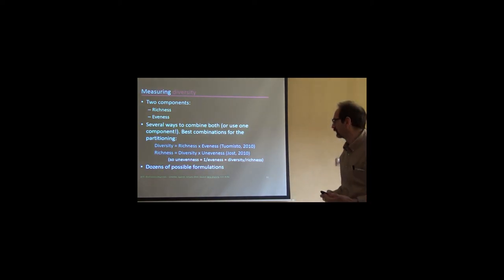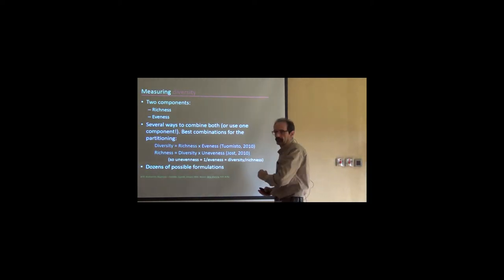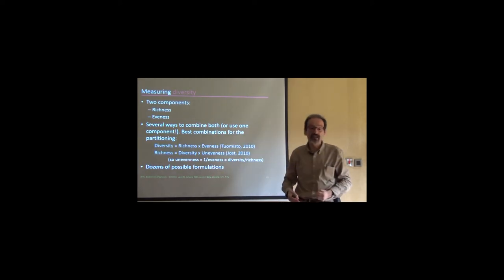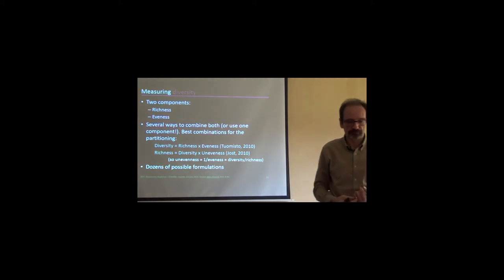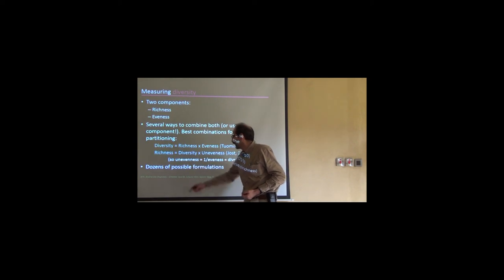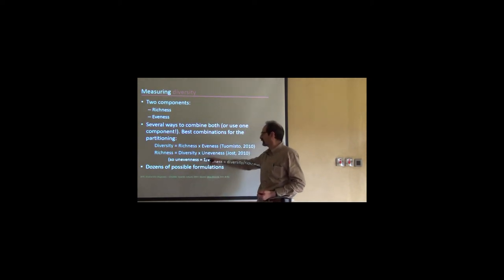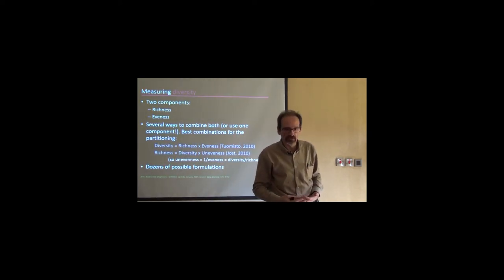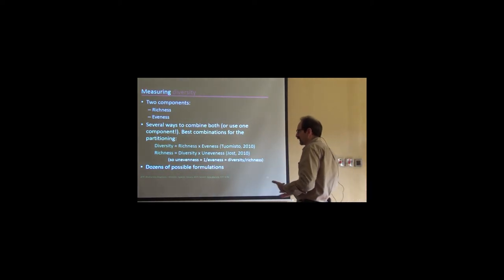And if we maintain the same number of species, the same number of colors in this case, but we change the proportion of colors by making, for instance, the red species being extremely successful ecologically and displacing other species, we are decreasing evenness. So in this case you have less evenness, and even less here, where most of the species are dominated by one single species, which is the red species, although the other species are also present.